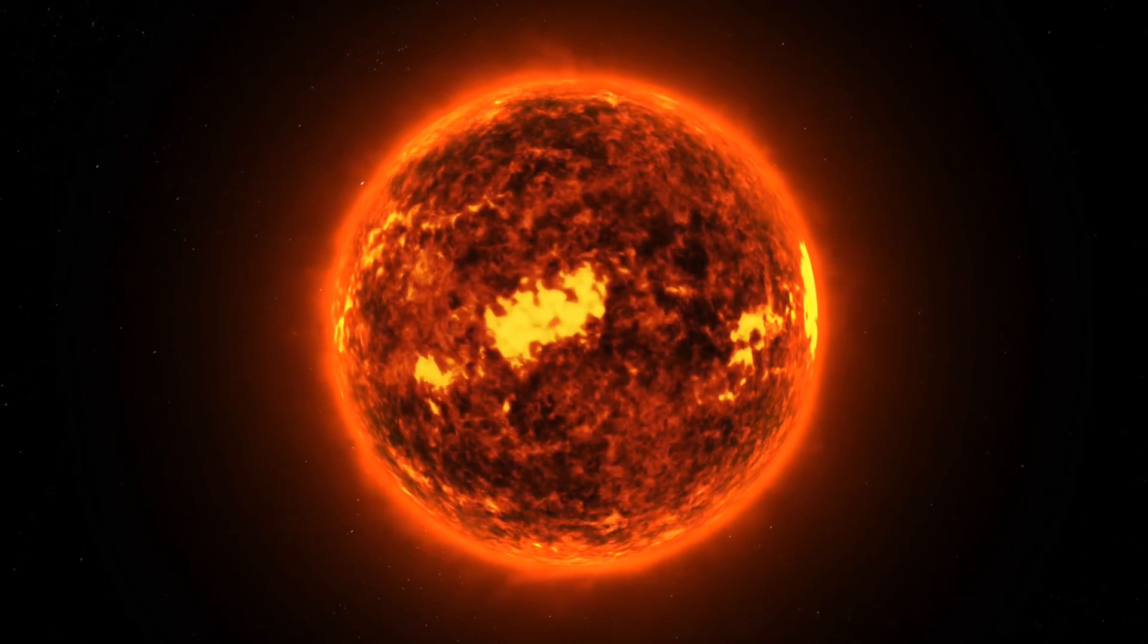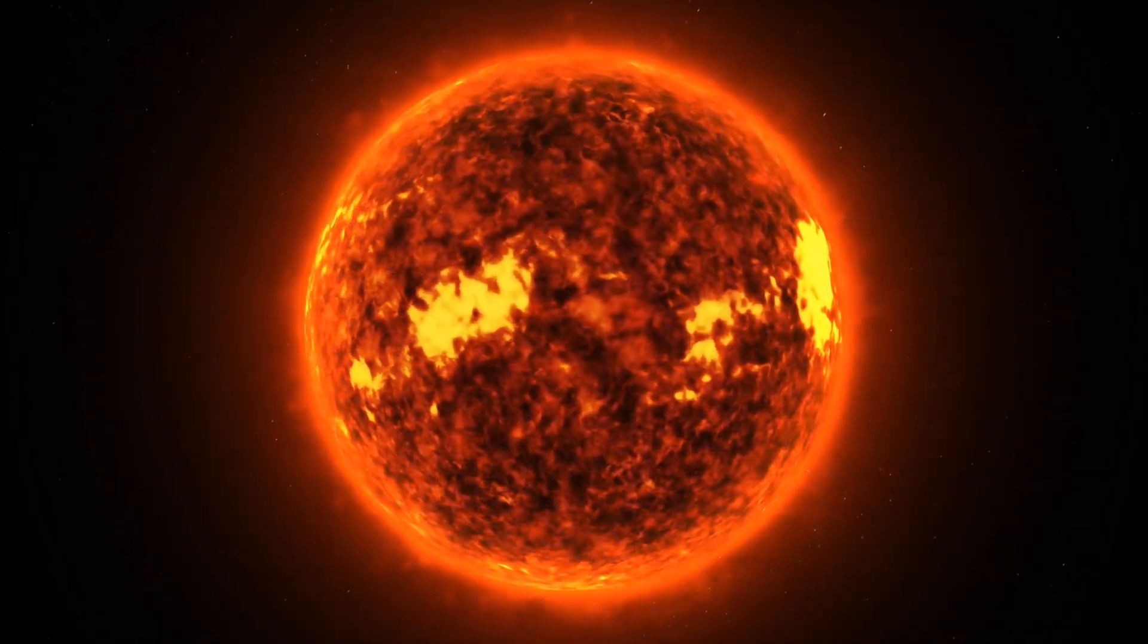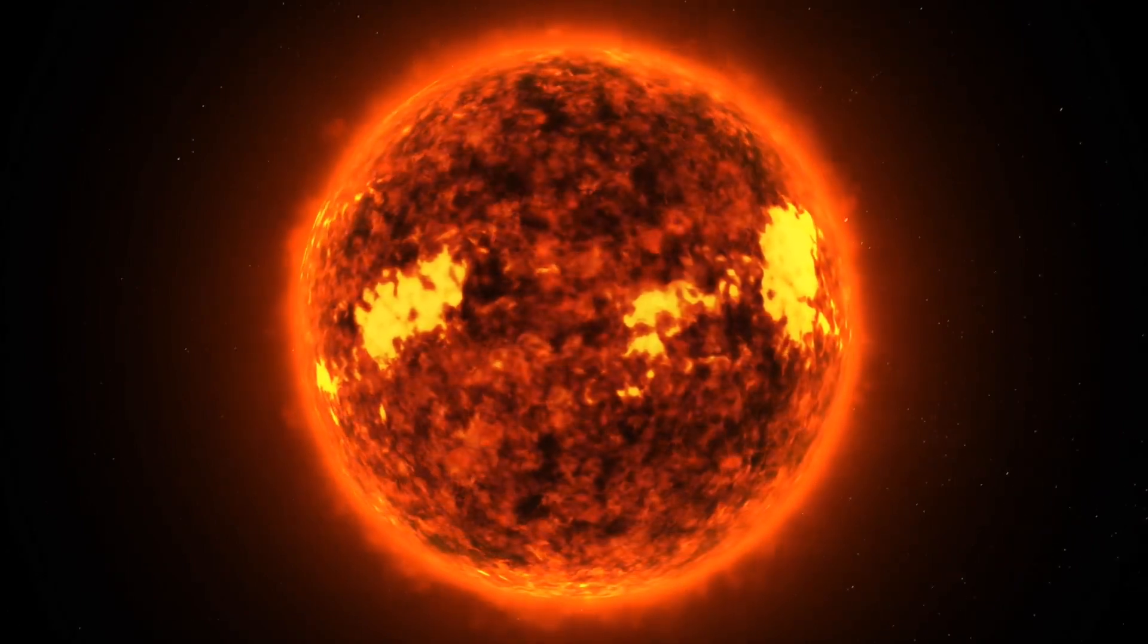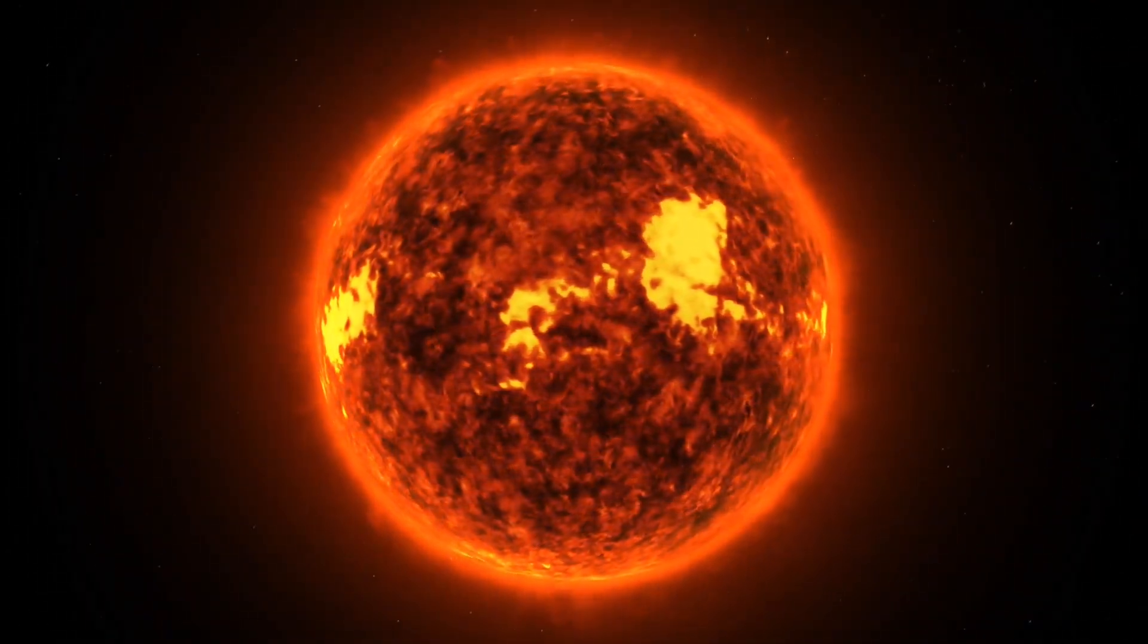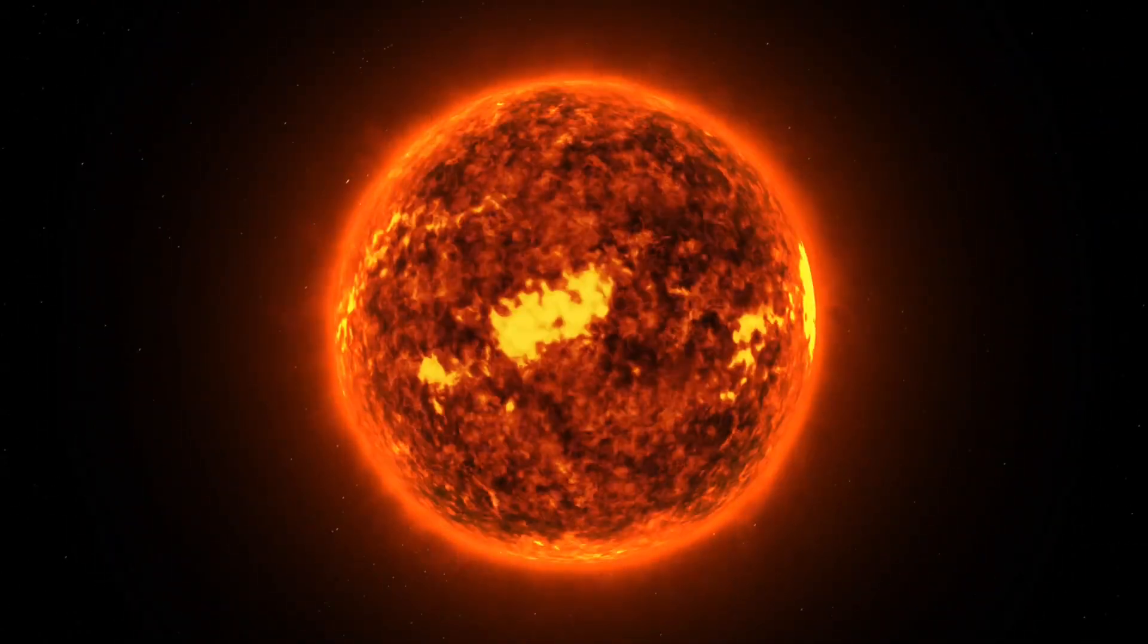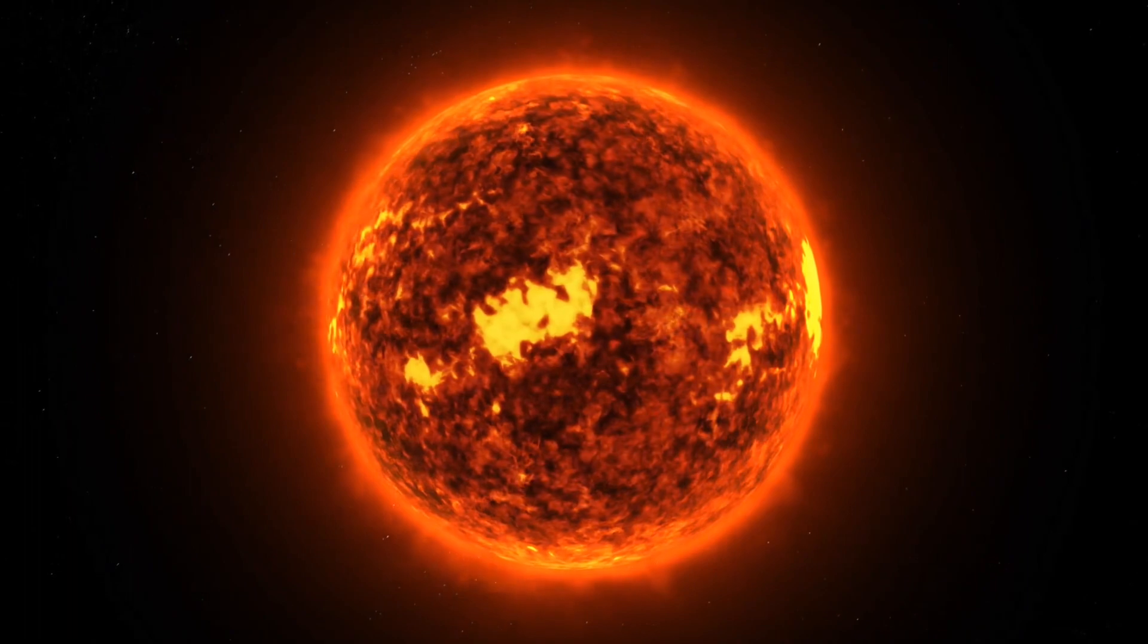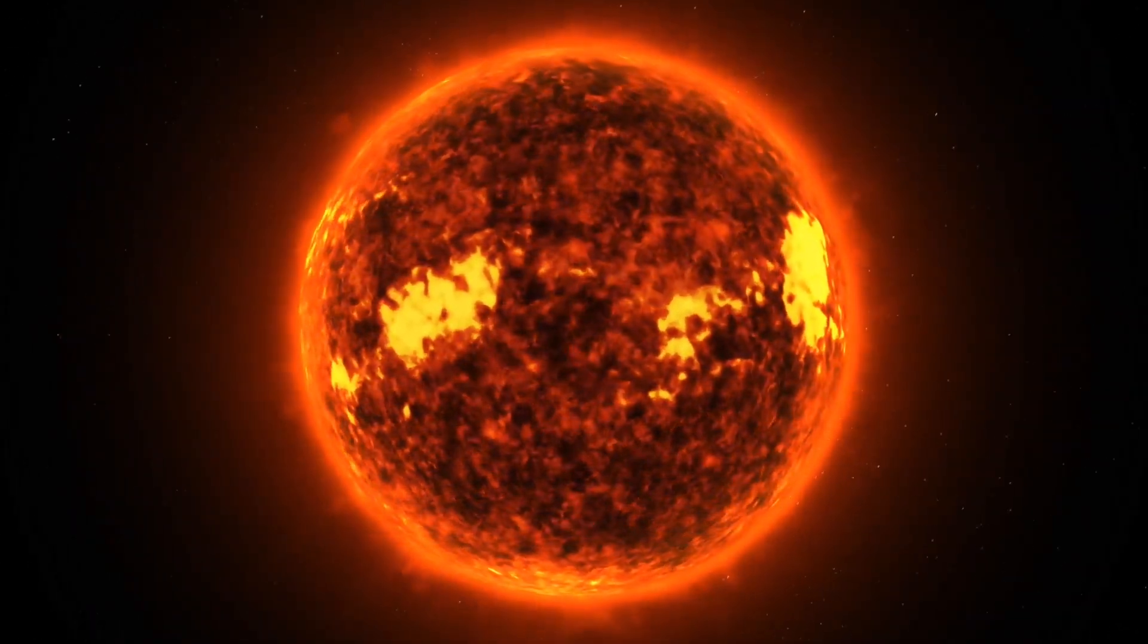Main sequence star. Once nuclear fusion starts, the star enters the main sequence phase, where it will spend the majority of its life. The energy produced by the nuclear fusion counteracts the force of gravity, creating a stable equilibrium. The star shines brightly and steadily during this phase.